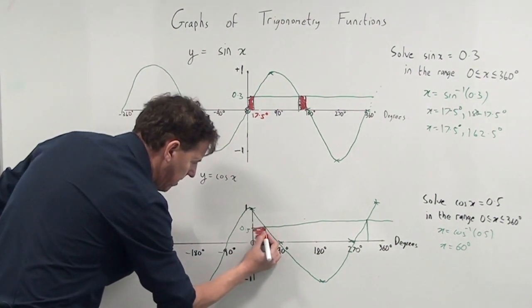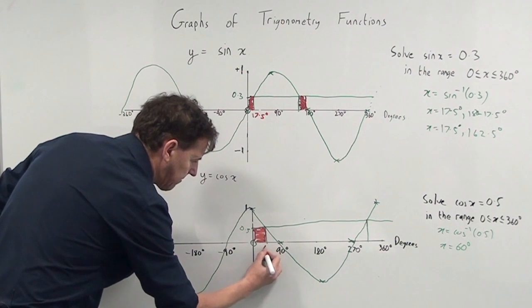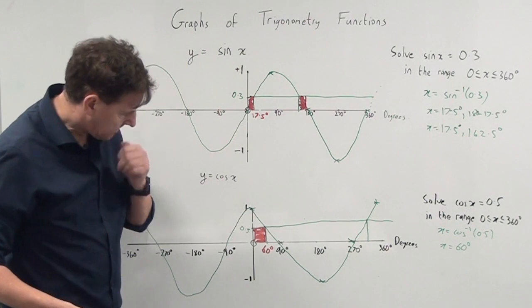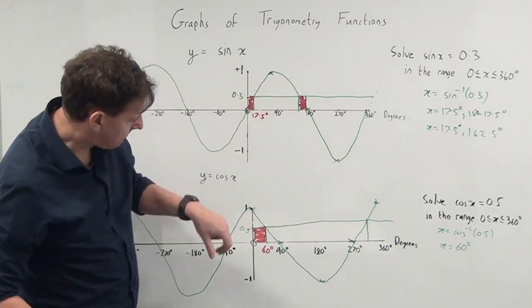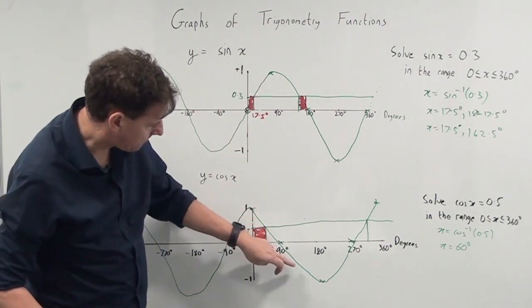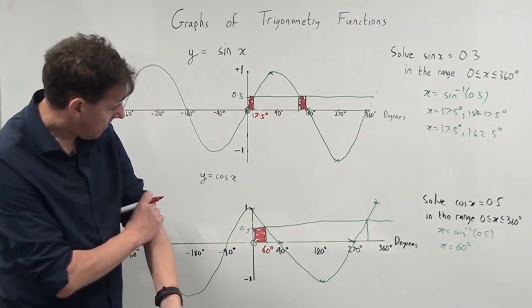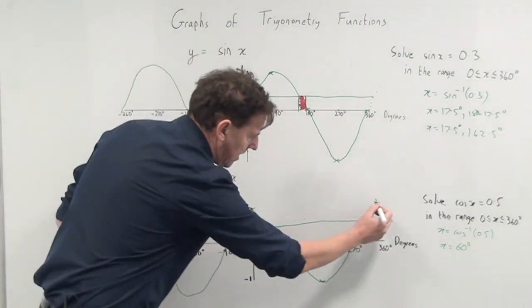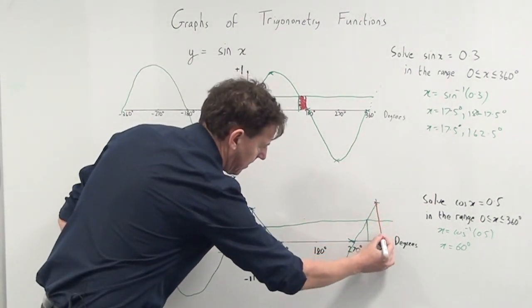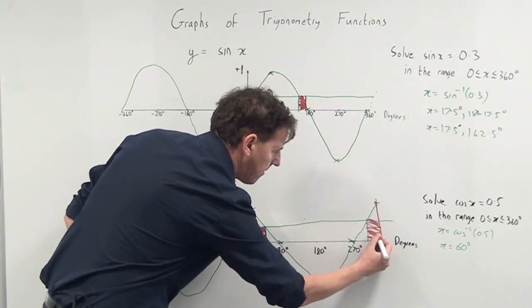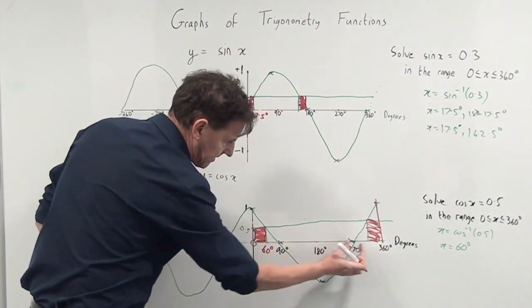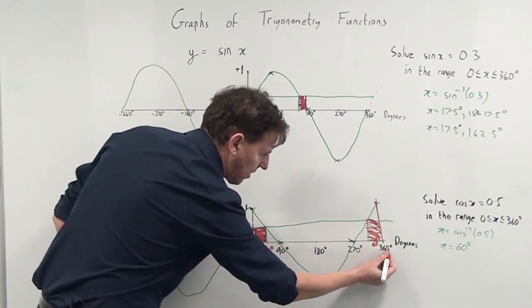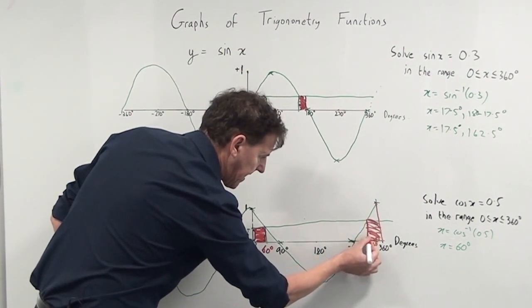And now look at the graph - the graph, just like my sine graph, is symmetrical. So I'm looking now for this gap here also being 60 degrees. So if you look, if I draw a line here at 360, that region inside there is exactly the same region as that region there. So in other words, if I take 60 degrees off the 360, that will give me that exact cut inside there, which is 300 degrees.